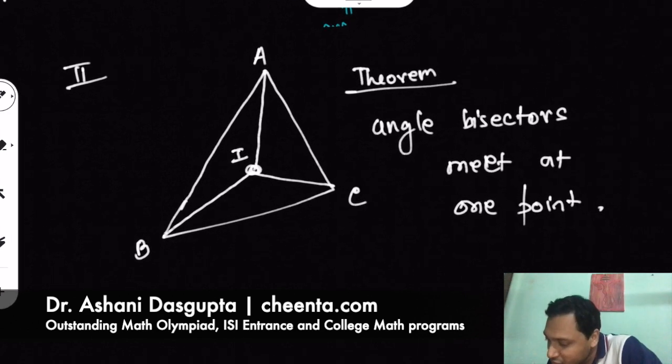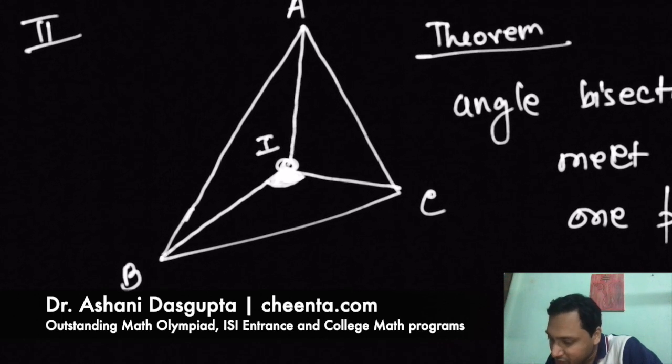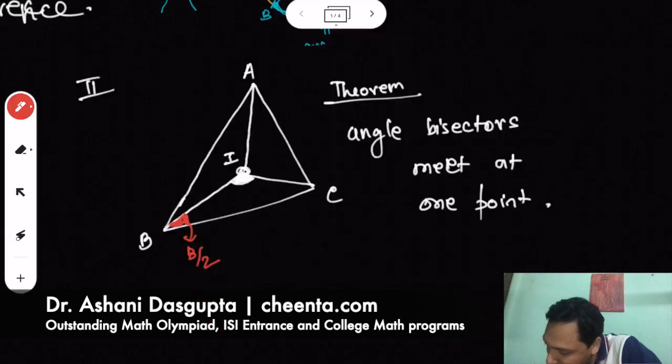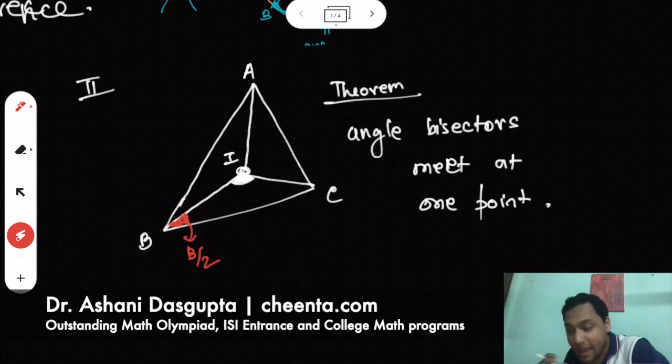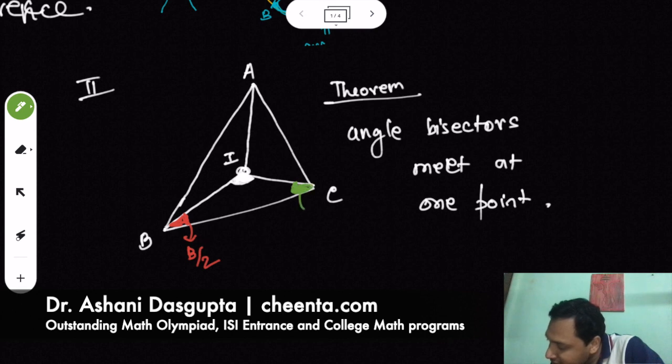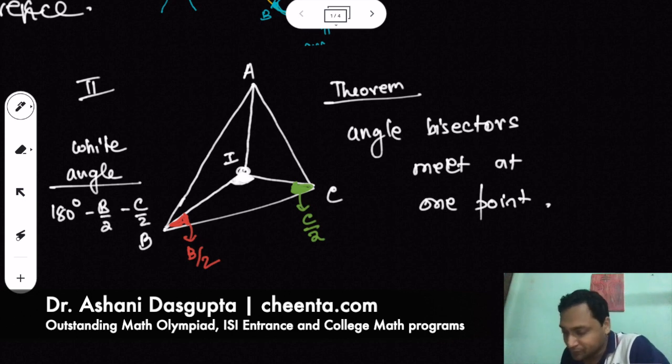We want to know the value of this angle right here. Now this one is quite simple. This angle is B over 2, because this total angle is B, so half of it is B over 2. Now this angle right here is C over 2. So the white angle is 180 degrees minus B over 2 minus C over 2.